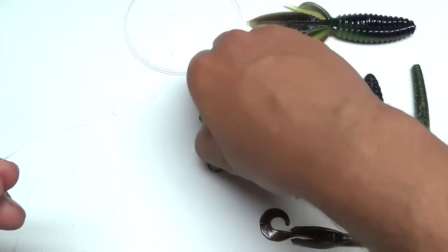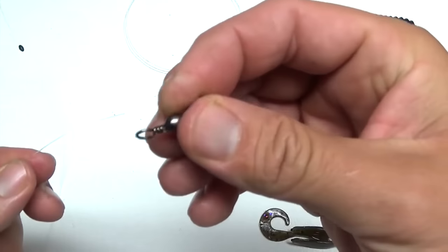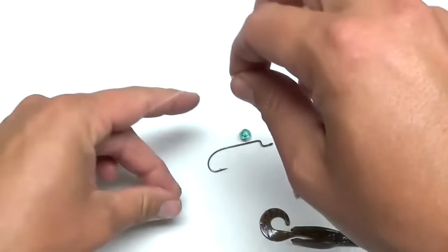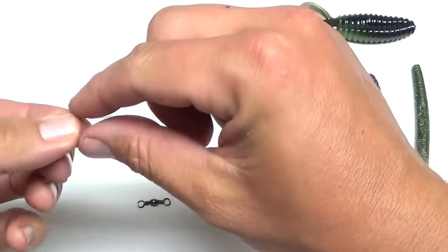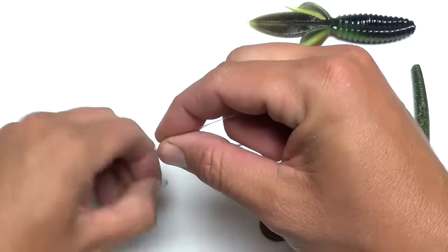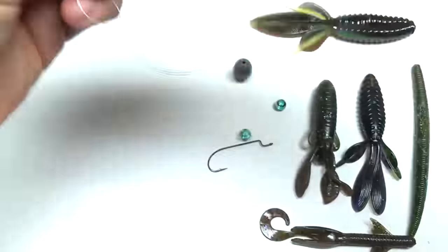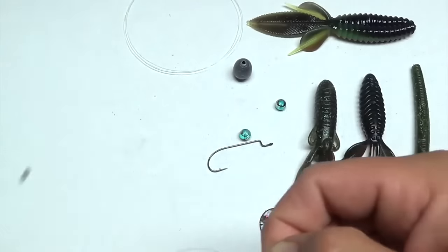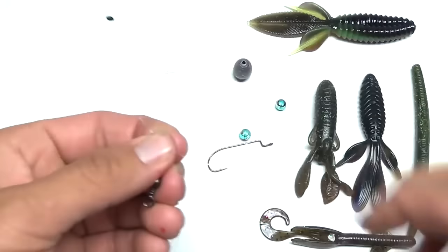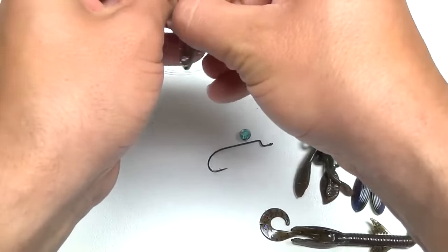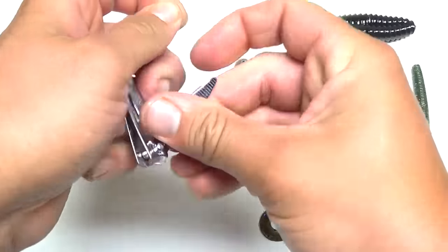Then the next thing you want is a swivel, just a good swivel. So just tie a polymer knot here. Okay, then you just trim your tag end on your knot or your swivel.